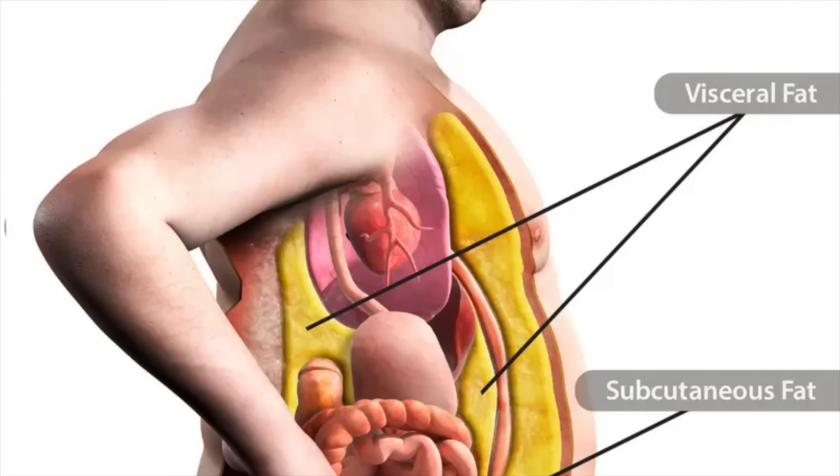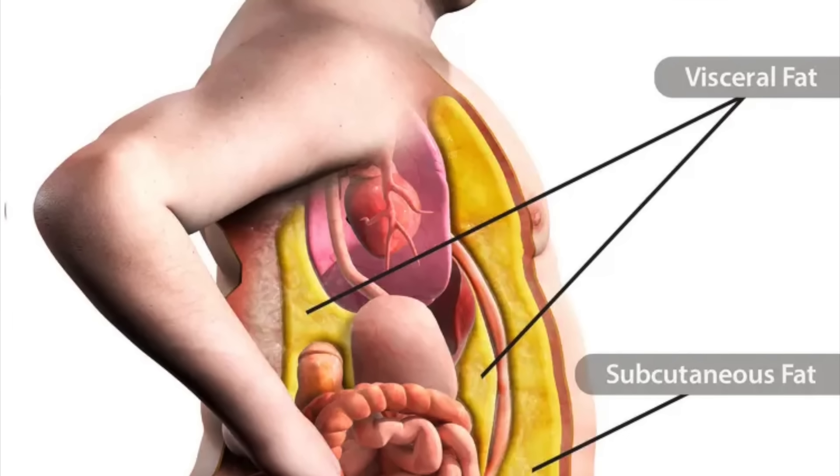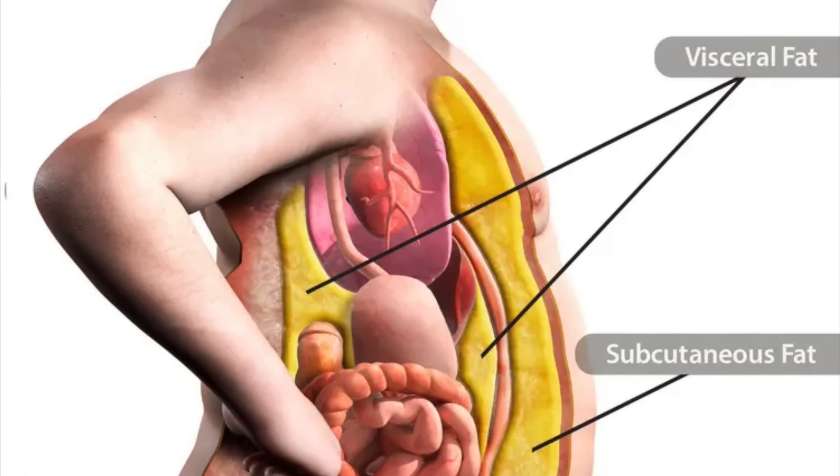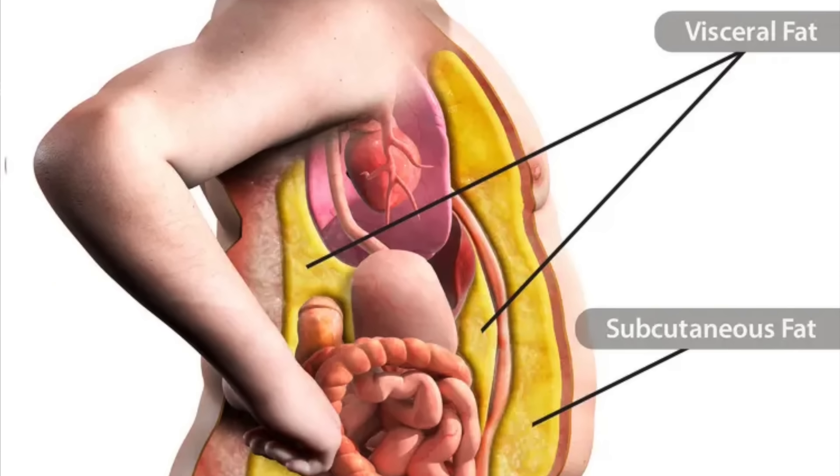There's actually a simpler way — a simple test you can do at home, no equipment needed, completely free. Your waist circumference is sometimes used as a surrogate, an estimation of your visceral fat, and it's pretty good. The problem is waist circumference can't distinguish between visceral fat — the fat inside or right outside the organs — and subcutaneous fat, the fat under the skin.